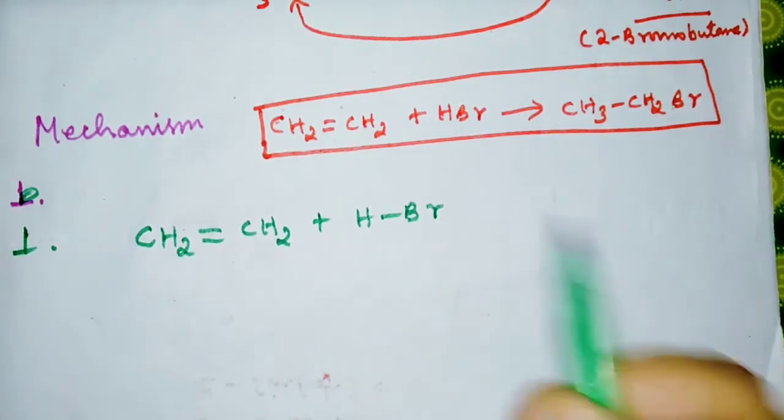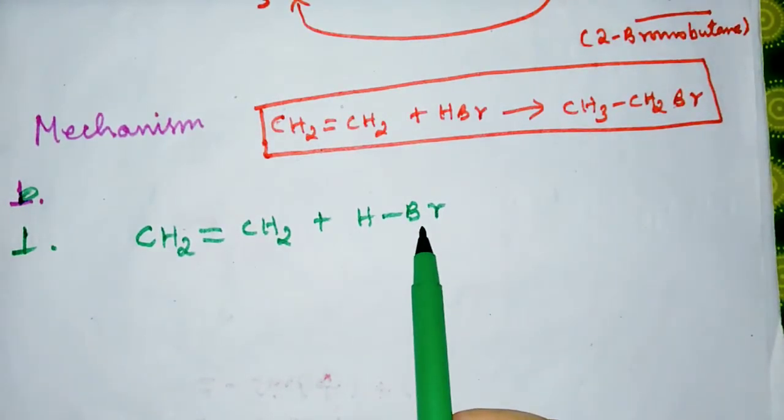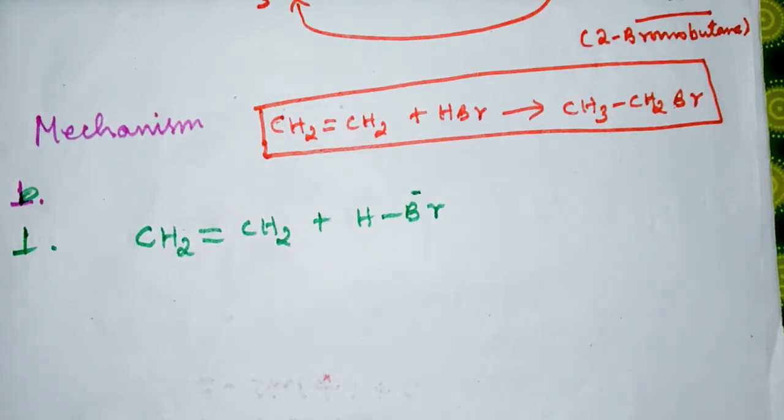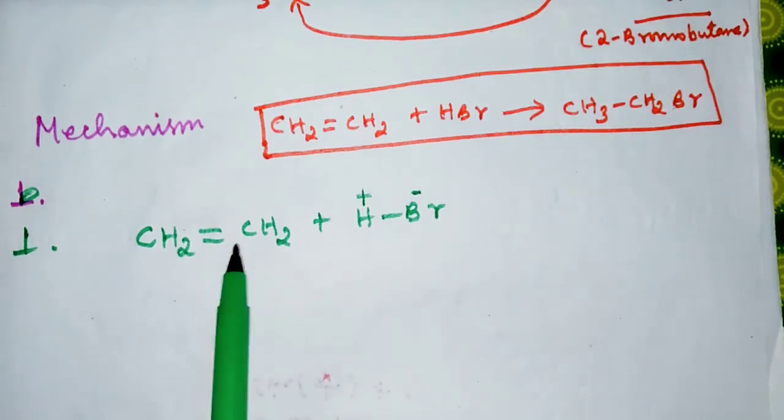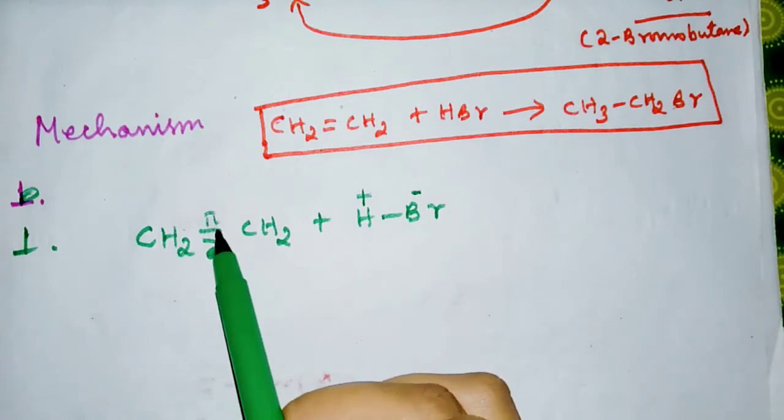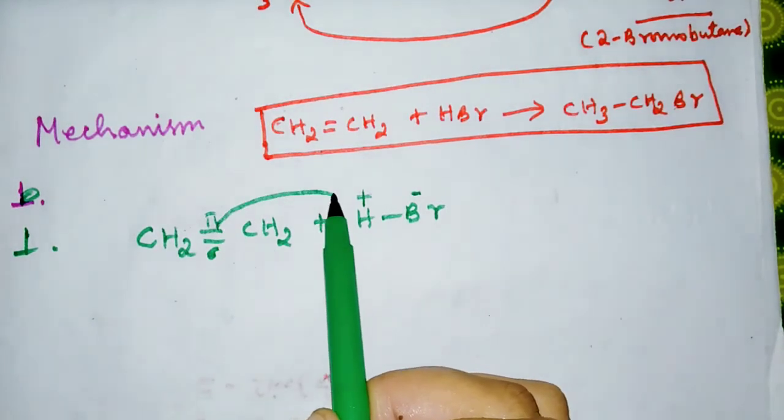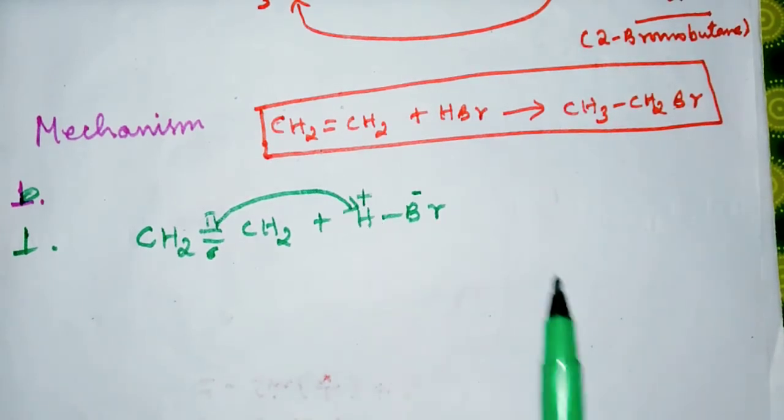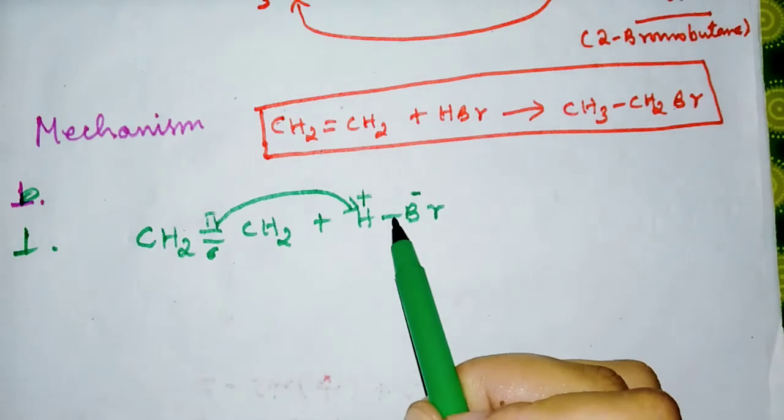Have a look here. Br is more electronegative than hydrogen, so it has a negative charge and here we have a positive charge. Now this pi bond—here we have pi bond and sigma bond—the pi bond picks up this proton. H+ is called a proton, and then this one is liberated as Br-.